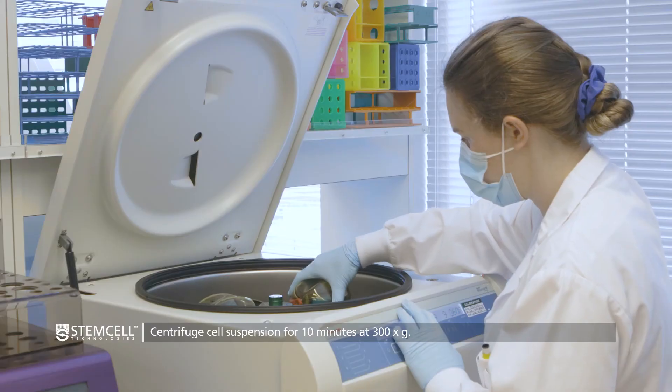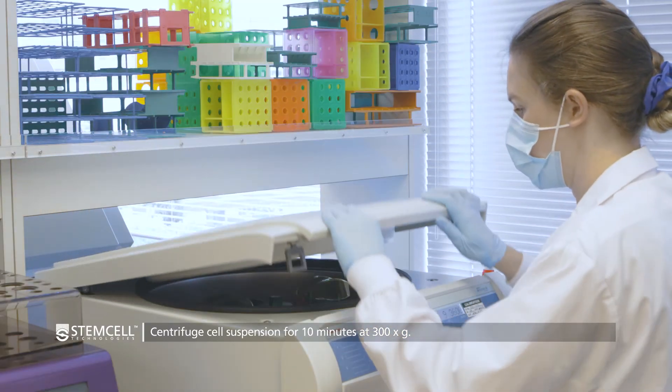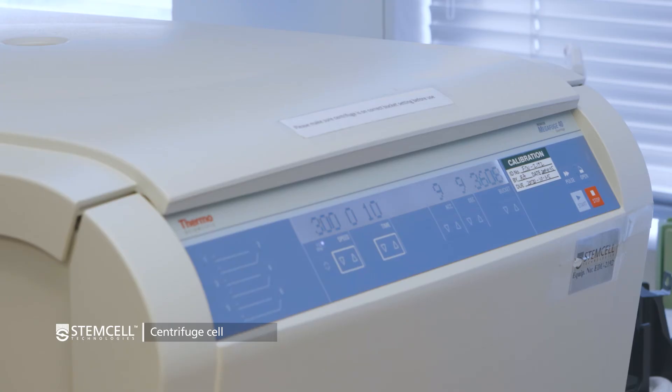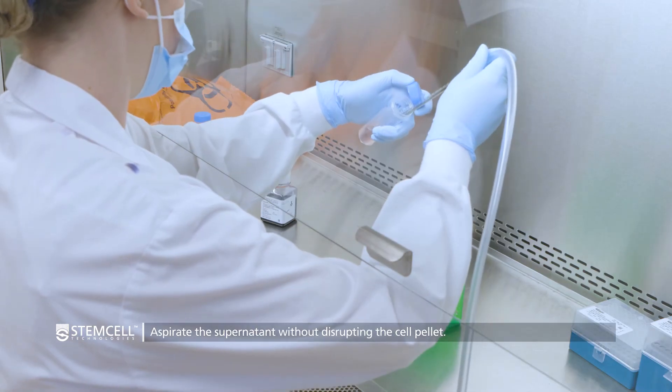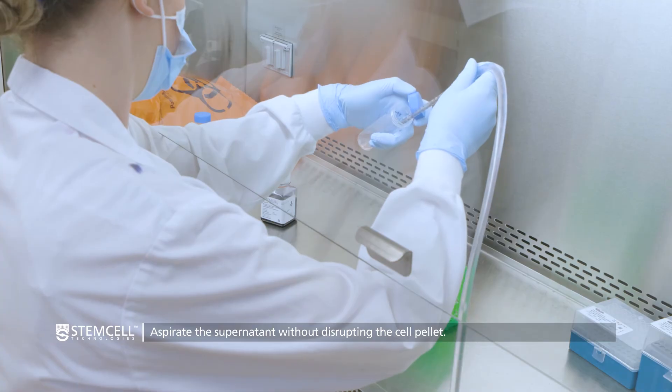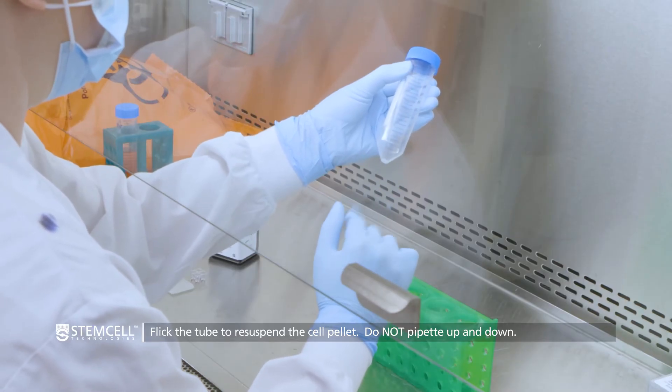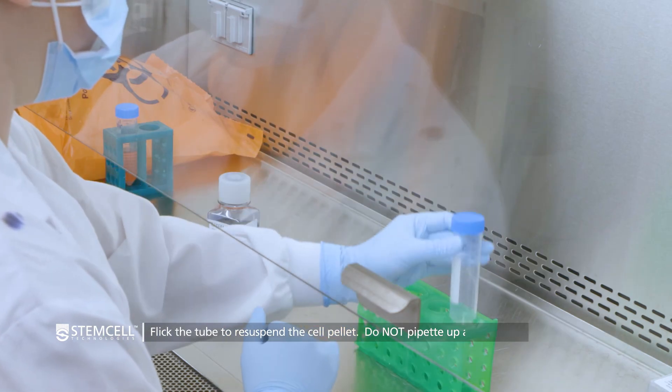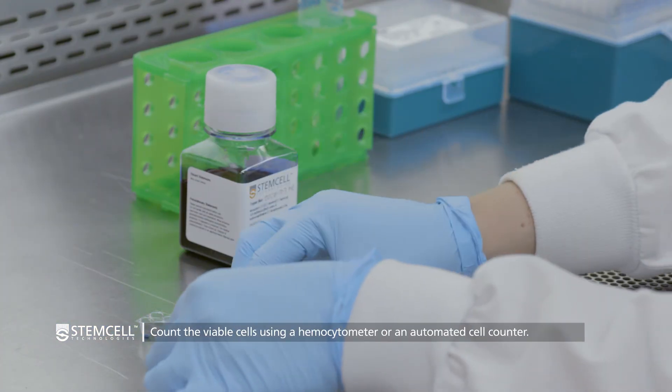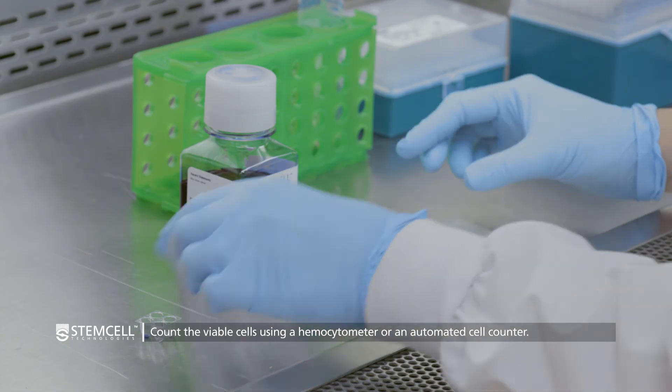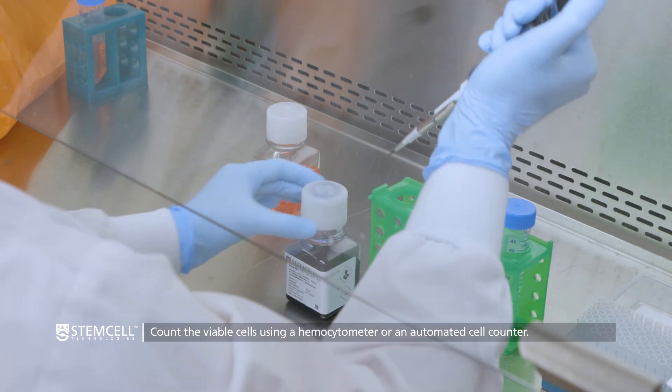Centrifuge the cell suspension for 10 minutes at 300 times G. Aspirate the supernatant without disrupting the cell pellet. Flick the tube to re-suspend the cell pellet. Do not pipette up and down. Count the viable cells using a hemocytometer or an automated cell counter.